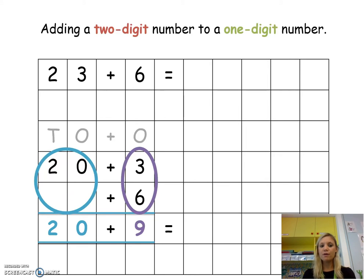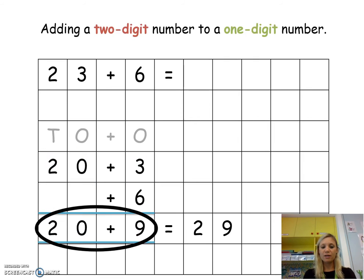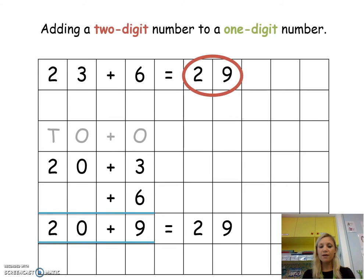And then finally we're going to add the two bottom numbers together, which is 20 plus 9 equals 29 for the final answer. 23 plus 6 equals 29.